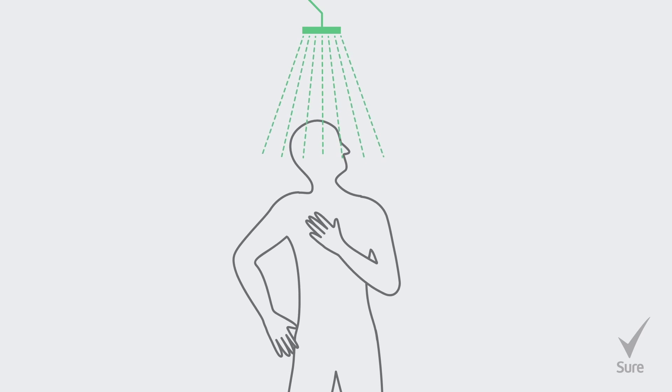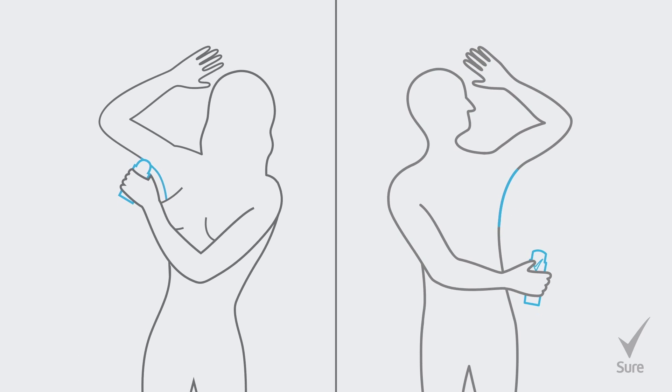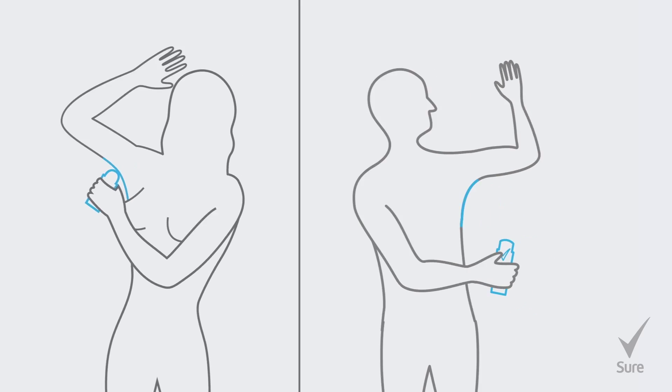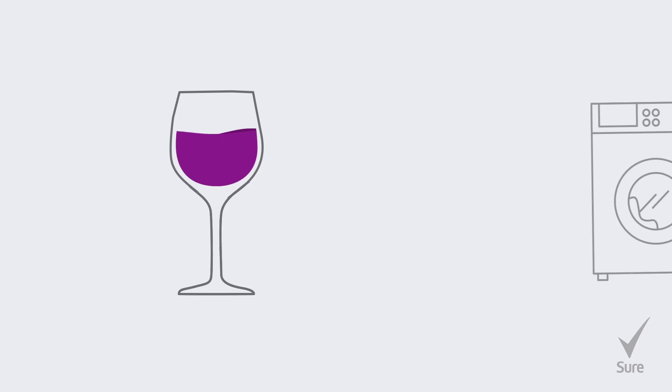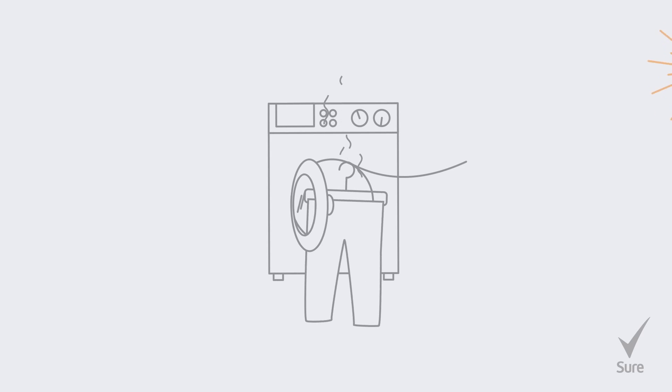Wash at least once a day. Apply an antiperspirant daily to keep you free from sweat and smelling fresh. Avoid certain foods like curry, garlic or spice, and alcohol. To prevent the build-up of body odor on your clothes, make sure they're properly cleaned and completely dry.